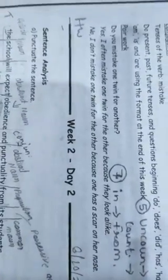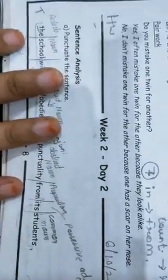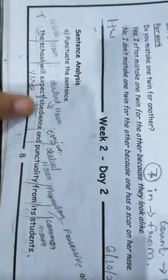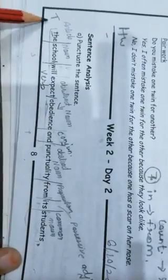Date 6, 10, 20. This was your homework. But I'll tell you what you have to do in your homework. If you see this sentence, week 2, day 2. The sentence is like the school will expect obedience and punctuality from its students. First of all, what do you have to do? You have to punctuate the sentence. I have given a full stop and capital letter.